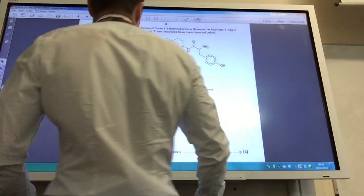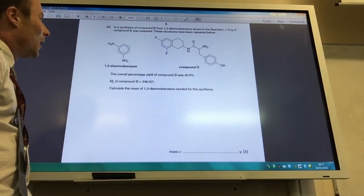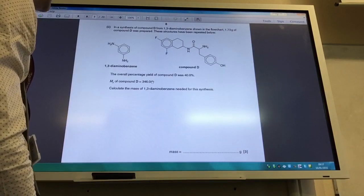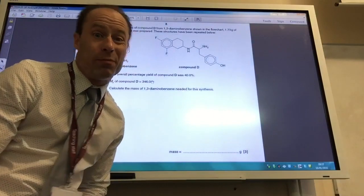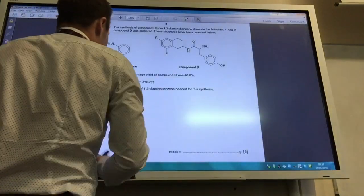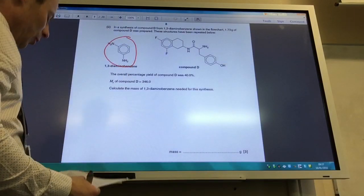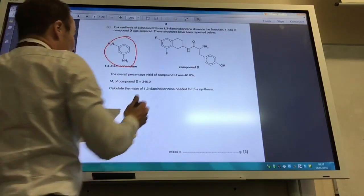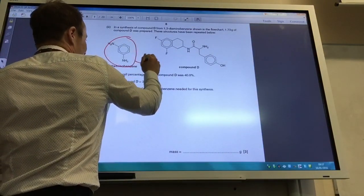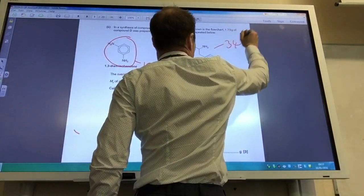In the synthesis below, we're going to do a little bit of percentage mass calculations now. 1.73 grams of compound D was prepared, and luckily they've drawn the structures for us again so we don't have to keep turning the page. That's always nice. Over percentage yield of 40%, what is the mass of 1,3-diaminobenzene that I needed, which is that boy there, to do the synthesis? The molar mass for that, if you add it all up, is 108. Let's do that. They've kindly given me the molar mass of that, which is 346. That saves you about 50 minutes adding things up.